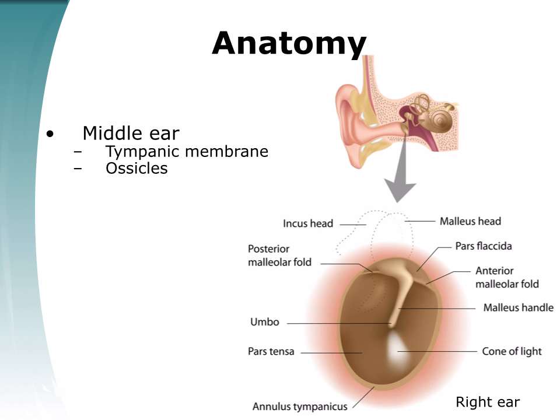The tympanic membrane is an ovoid, three-layered structure consisting of squamous epithelium laterally, respiratory mucosa medially, and an intervening fibrous layer. It normally has a conical shape with the apex maintained medially by the support of the malleus.